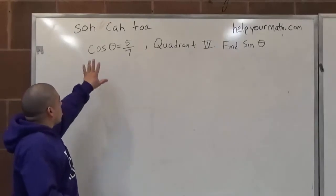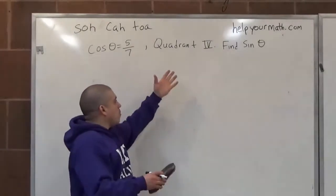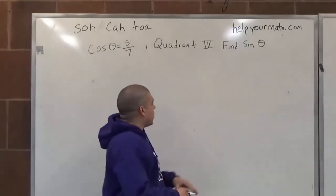Suppose cosine of an angle is 5 over 7 and it terminates in quadrant 4, and we want to find the sine of the angle.